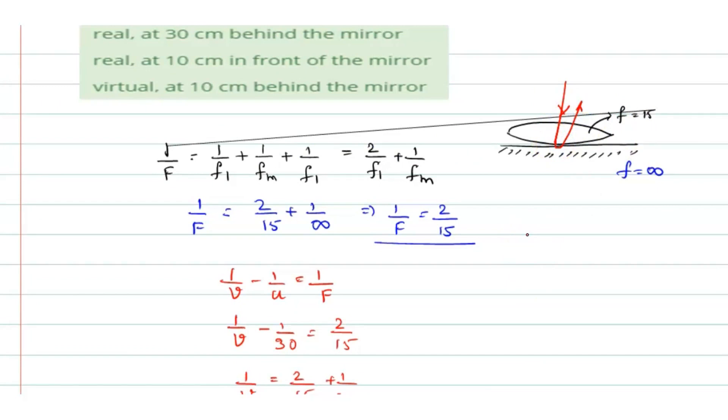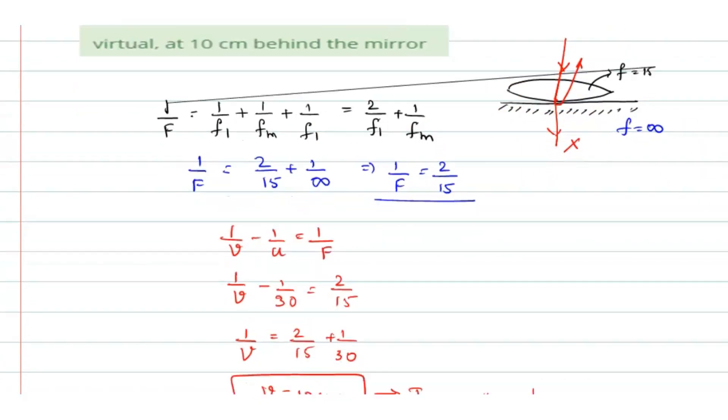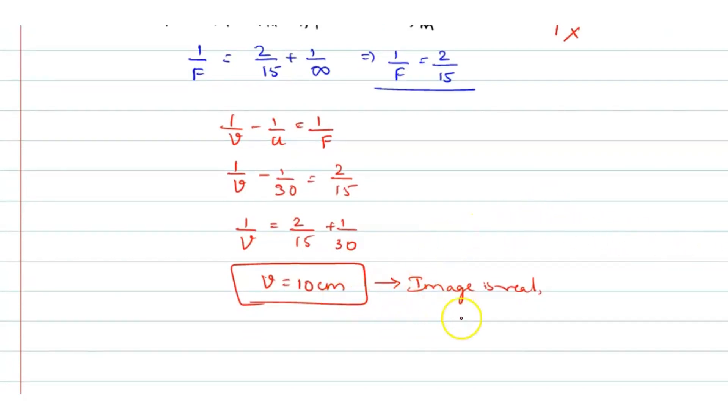So you can say that image is real and is formed in front of the mirror because from the mirror it cannot go on the other side. This is not possible. So in the mirror always when it gets reflected, you will get the case of the plane mirror and you will get the image in front of a mirror. So this will be the nature of the image form.